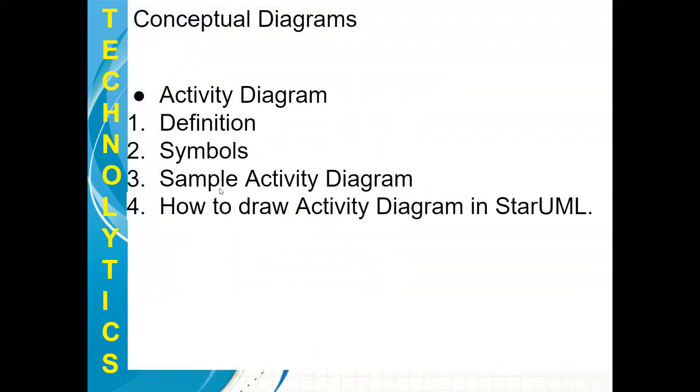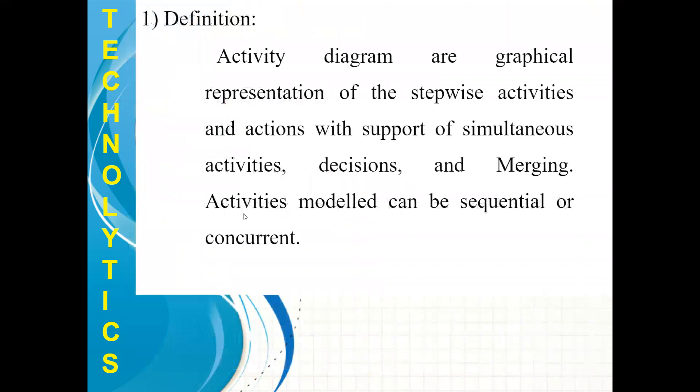The points which we are going to cover in this video are Definition of Activity Diagram, Symbols used in it, Sample Activity Diagrams and how to draw Activity Diagram in Star UML. Let's understand the definition of it. Activity diagrams are graphical representation of the stepwise activities and actions which support simultaneous activities, decisions and merging activities. Modelled can be sequential or concurrent.